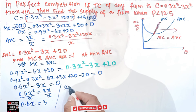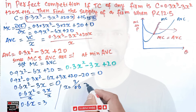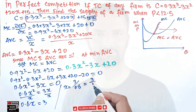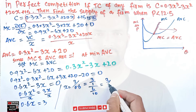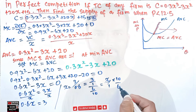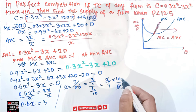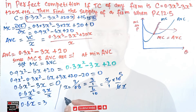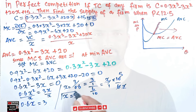So x = 3 / 0.6 = 3 / (6/10) = 3 × (10/6) = 30/6 = 5. Therefore x = 5.